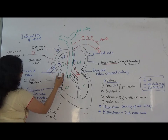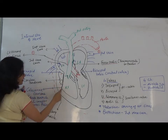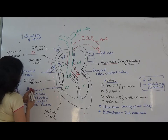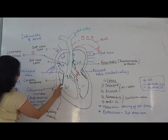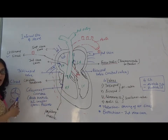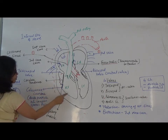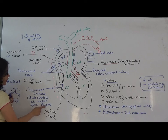The bicuspid valve is held in proper position by string-like structures called chordae tendineae. These arise from bulging structures called papillary muscles. The papillary muscles hold the chordae tendineae, and the chordae tendineae hold the bicuspid and tricuspid valves in proper position. The chordae tendineae also divide the interior of the ventricle into smaller spaces called trabeculae.